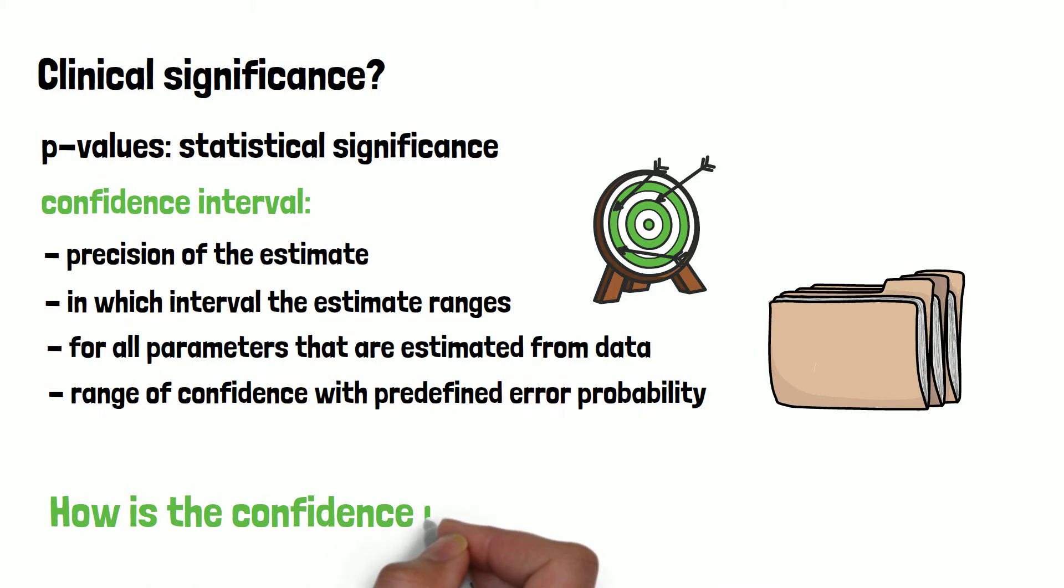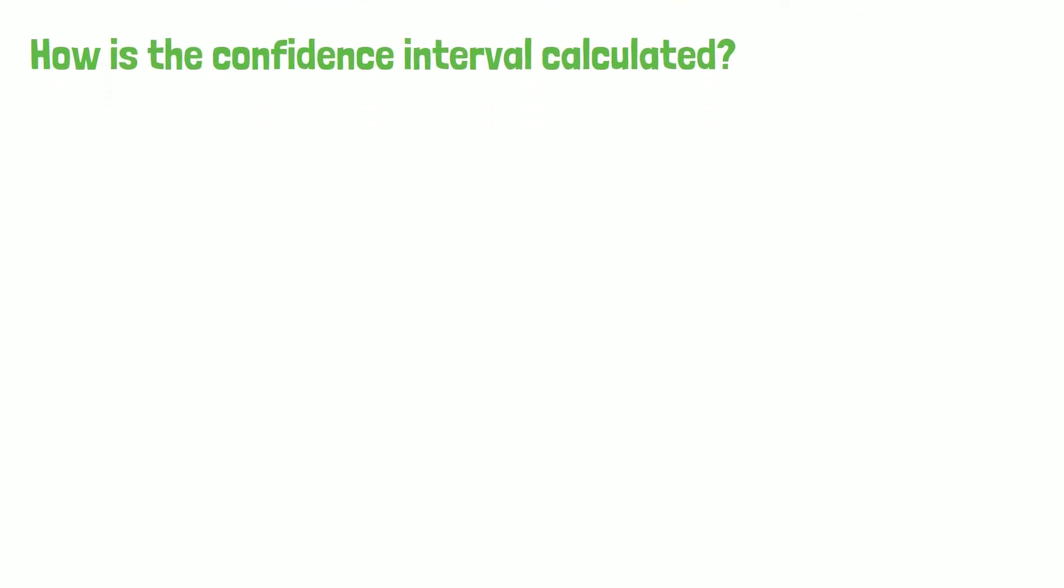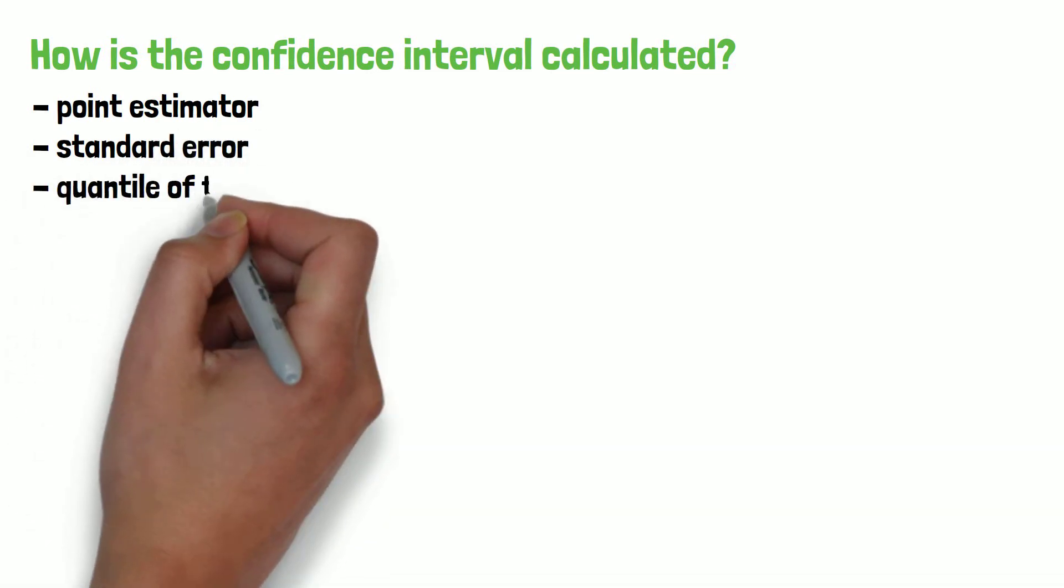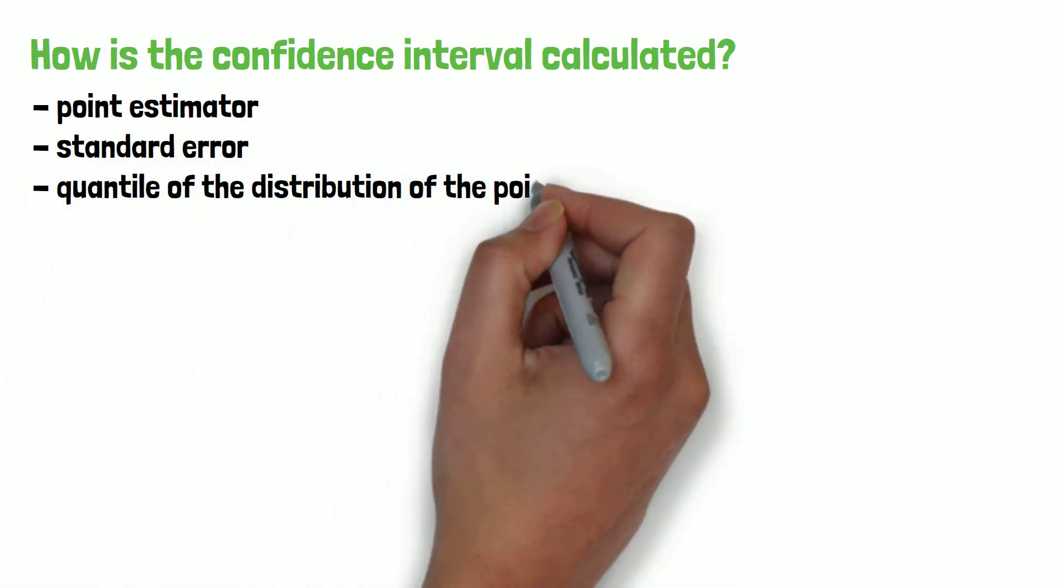How is the confidence interval calculated? The calculation of the confidence interval is done through the point estimator, the standard error as well as a quantile of the distribution of the point estimator.